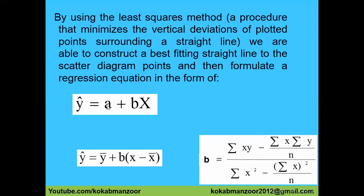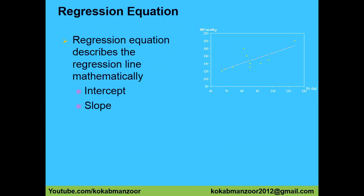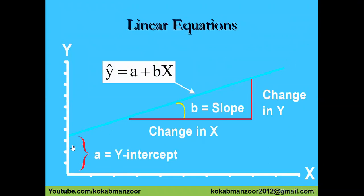The formula is: ŷ = a + bX, or equivalently ŷ = ȳ + b(X − x̄). Beta (b) is calculated as: [ΣXY − (ΣX)(ΣY)/n] divided by [ΣX² − (ΣX)²/n]. Don't be scared — I'll explain this in the easiest way possible so that everyone can understand. First, let's understand what intercept and slope are, then we'll move to the formula and a numerical solution.